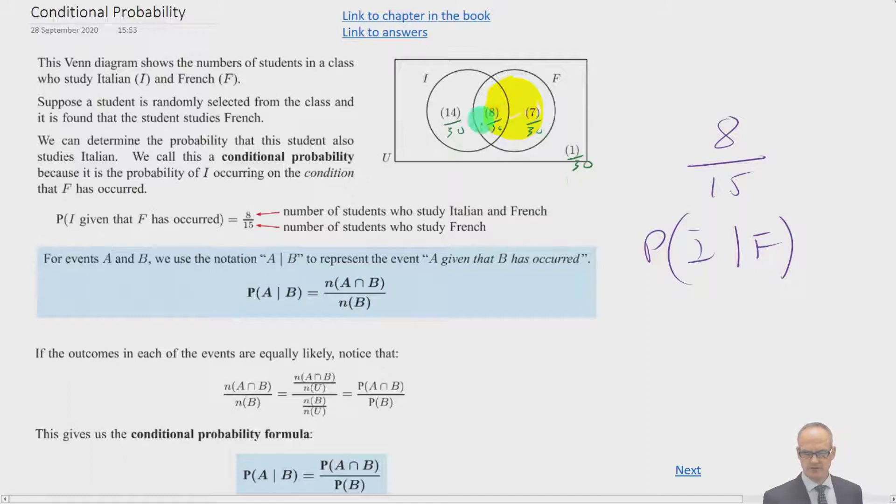And what you'll notice is that if you do 8 thirtieths and then divide it by 8 plus 7, which is 15 thirtieths, the thirtieths will cancel because we get 8 thirtieths times 30 over 15, and we're left with just 8 over 15. So this form here works just as well if we replace the n's with P's and do probabilities of the intersection divided by the probability of the outcome that we know has already occurred.